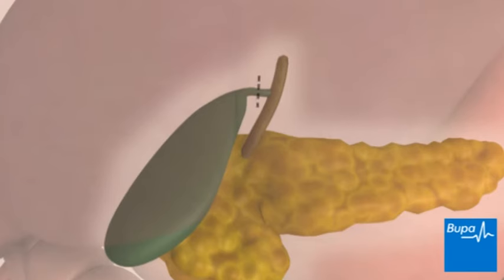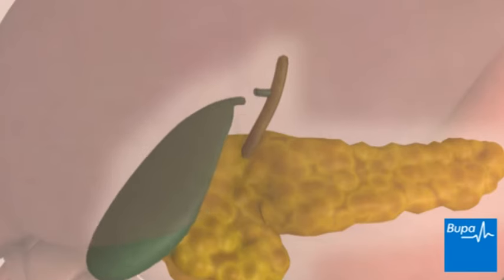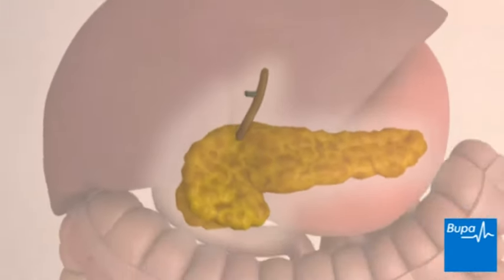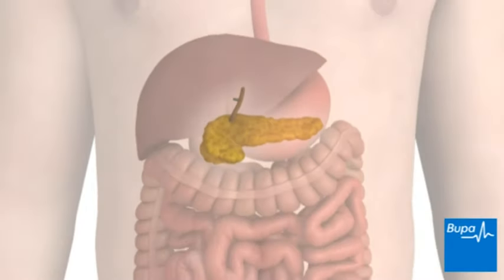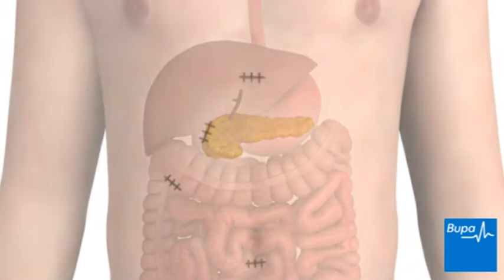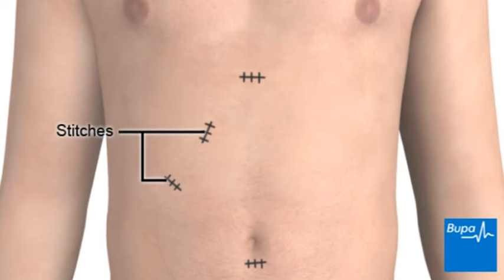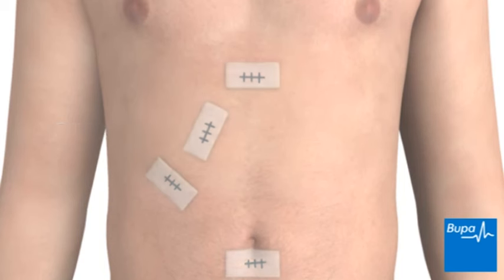Your surgeon will then remove the gallbladder. Once the gallbladder is removed, your surgeon will close the cuts with stitches and a dressing will be placed over them.